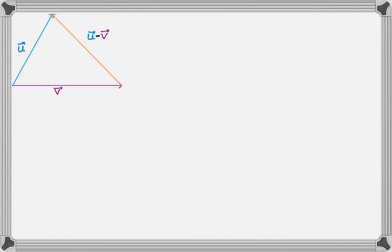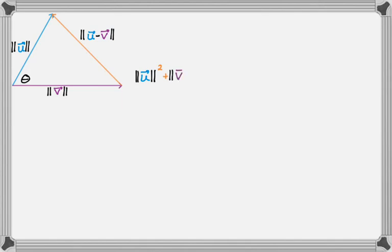Here's our picture. I'm going to add angle theta as the angle between u and v. I want to reduce this triangle down to just magnitudes, so I'll put magnitude bars around all these sides. Now I can apply the law of cosines: the magnitude of u minus v squared equals magnitude of u squared plus magnitude of v squared minus 2 times magnitude of u times magnitude of v times cosine of theta.